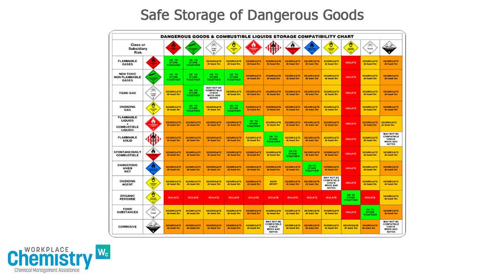A dangerous goods compatibility chart looks like this. We have the dangerous goods classes across the top and down the side of the chart, creating a grid.